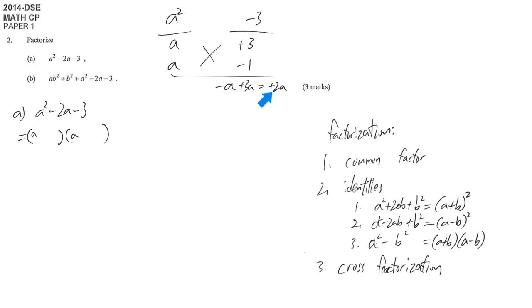We have a times positive 3, so positive 3a, which gives you positive 2a. Then you think, oh it is not the same term. That means this combination is wrong. This guessing is wrong.